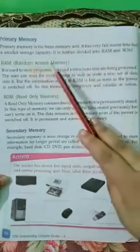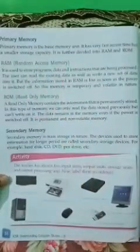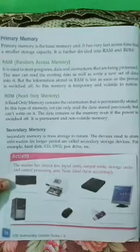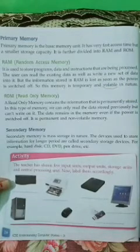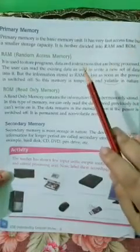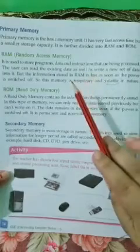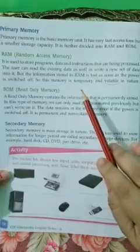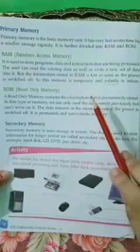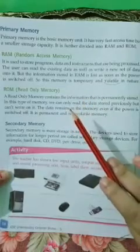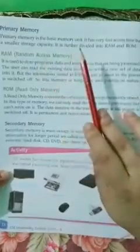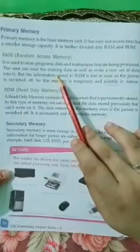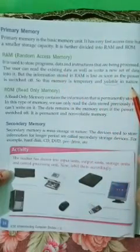RAM stands for Random Access Memory. It is a temporary memory and stores input, instructions, and output, but loses all information when the computer is turned off — that is why it is volatile in nature. For example, suppose you are working in MS Paint and drawing something. Suddenly your computer turns off because the power is switched off and you have not saved your drawing. After the power is switched on and you start your computer, you would find that your painting is not there, because when the power goes off, the RAM clears all its memory. It saves your data temporarily.